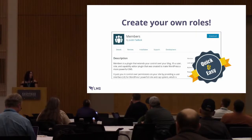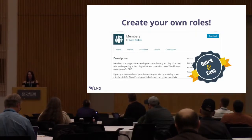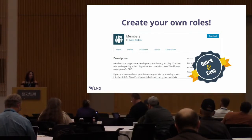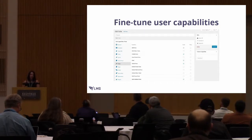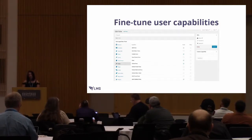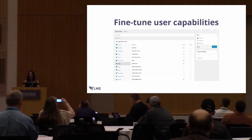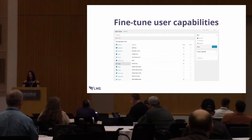We use a plugin called Members to create roles. You can do it with code, but in this instance we cheat a little and use the plugin. It's really lightweight and easy to use. It lets you break down roles by all the default capabilities in WordPress — there are about 50 or so. You can also create new capabilities that make it easier to determine what people are seeing, and I'm going to get into that a little bit later.